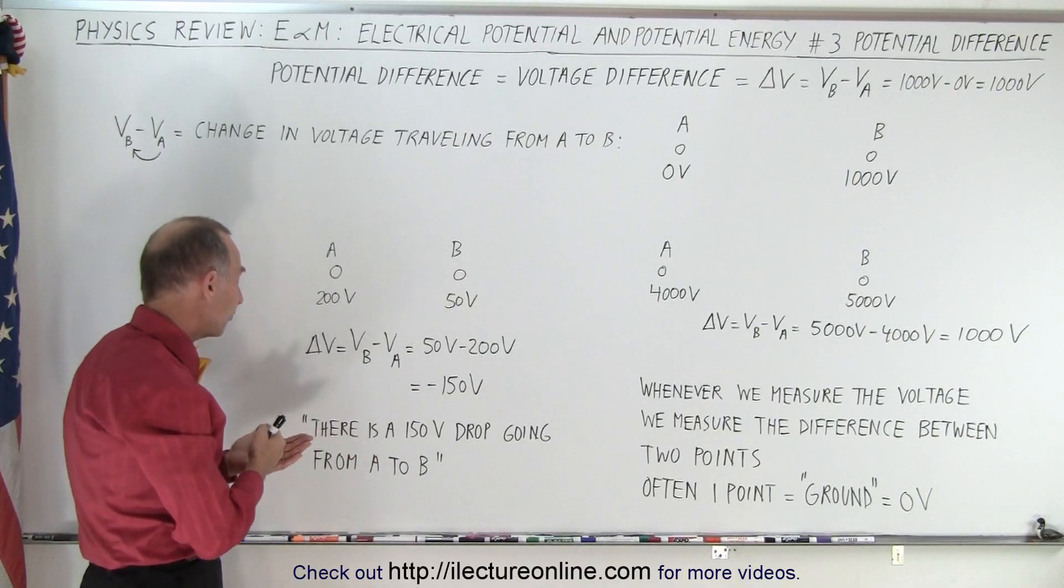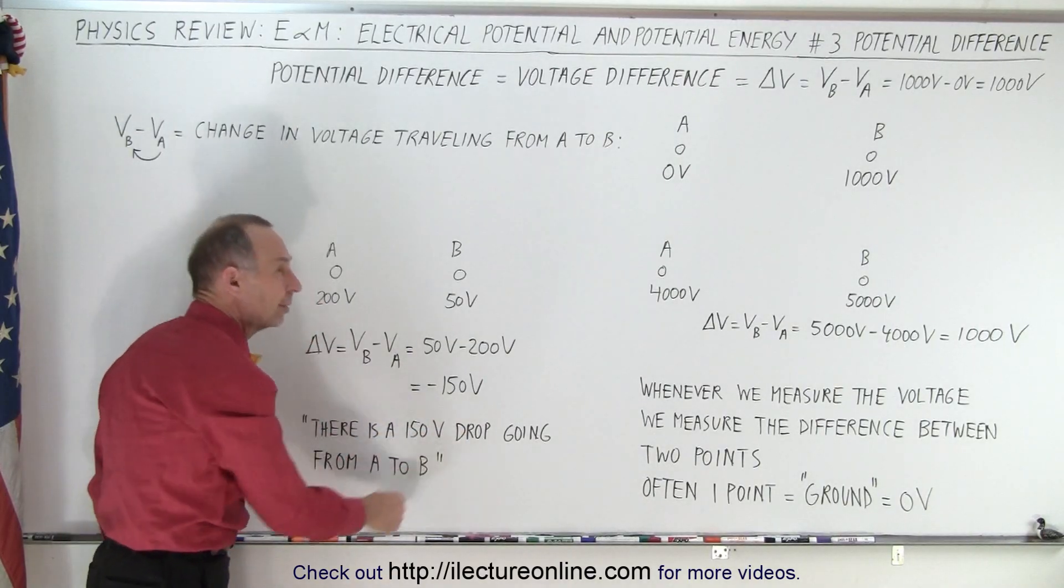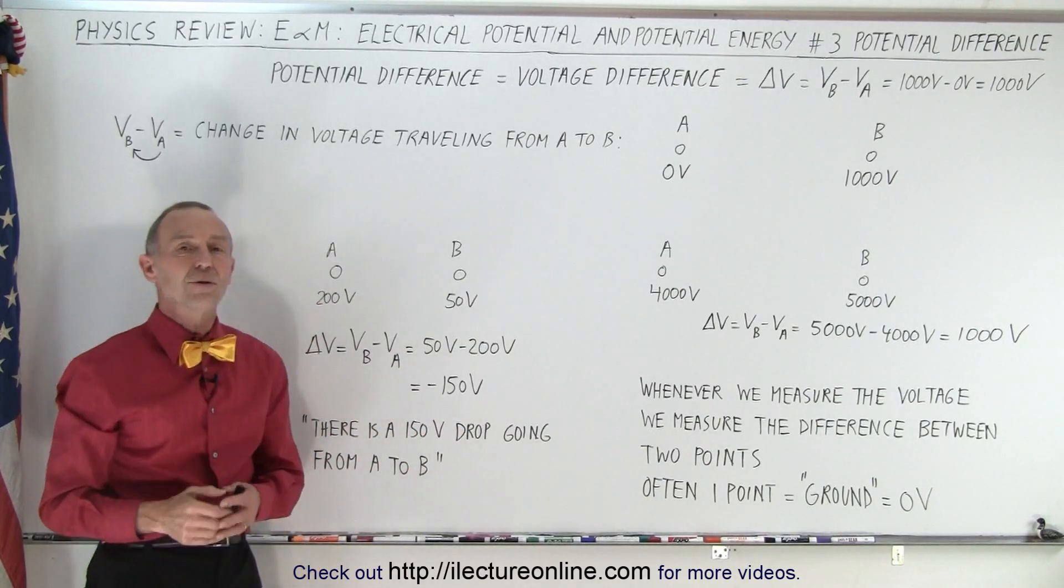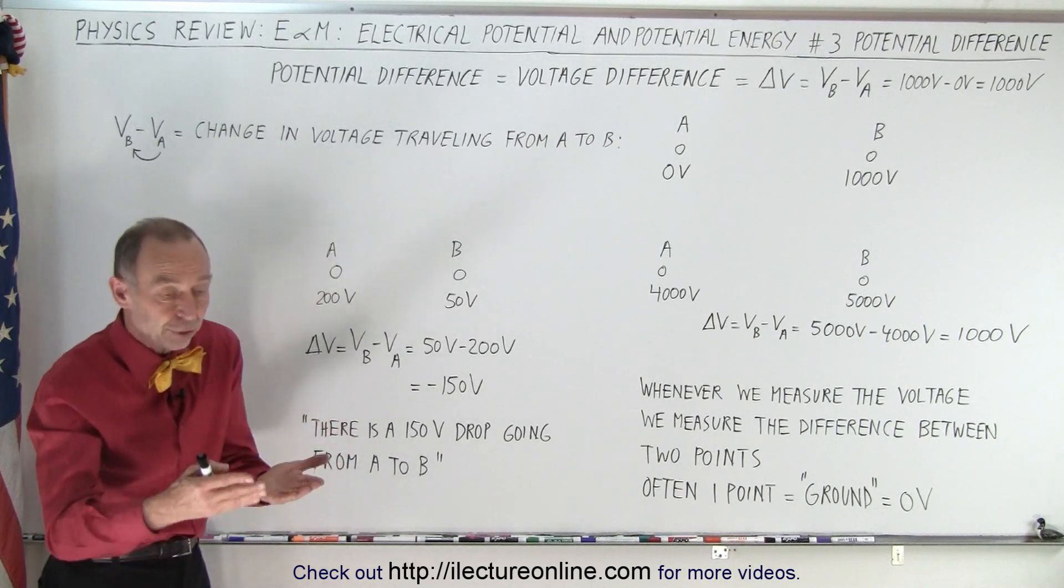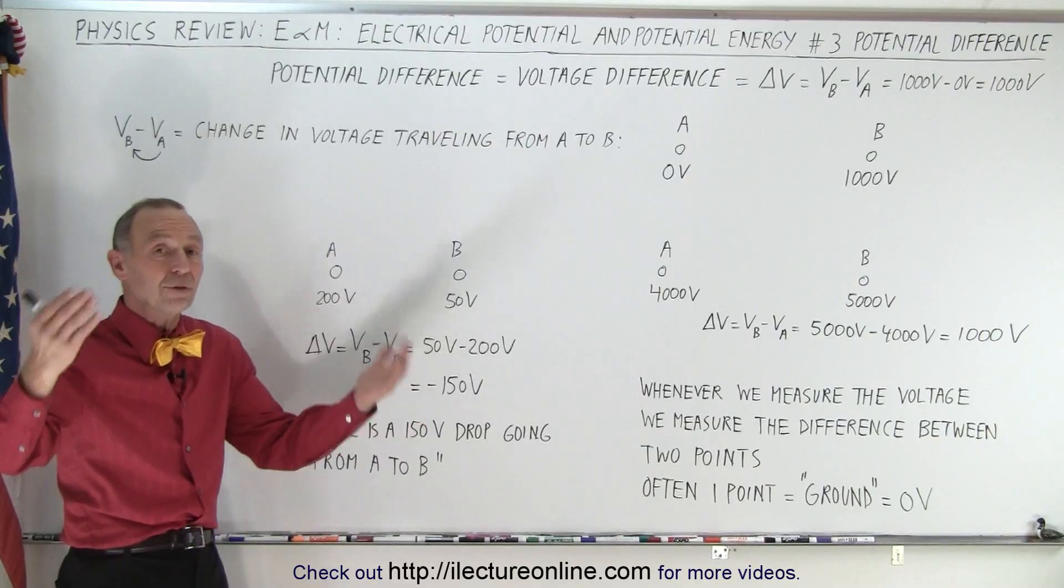That means when traveling from A to B, there's a 150 volt drop moving from A to B. And that's how we say there's a drop in voltage or there's a rise in voltage, which means there's either an increase or a decrease.